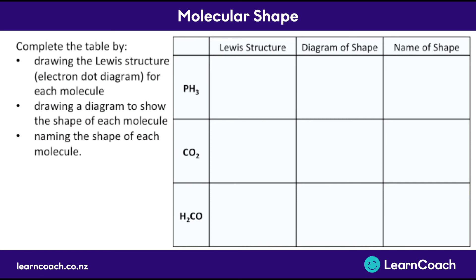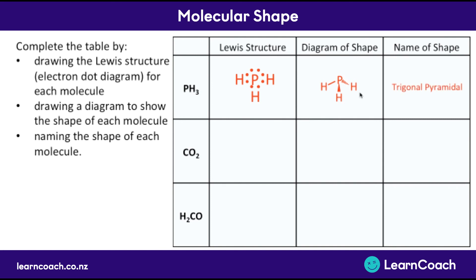Let's look at how this is used in a question. We need to complete a table: draw the Lewis structure, draw a diagram, and name the shape for each molecule. Starting with PH3 — phosphorus has five outer electrons and each hydrogen has one. There are four electron pairs, meaning it's a 3D shape, but only three are bonded. Drawing it with 109.5 degrees and one hydrogen coming out of the page and one going into the page, the name is trigonal pyramidal.